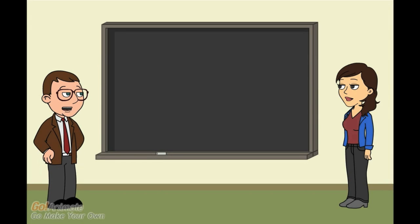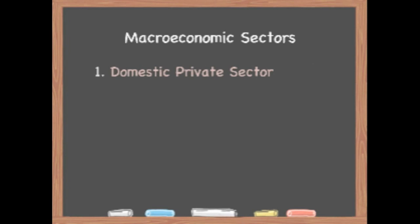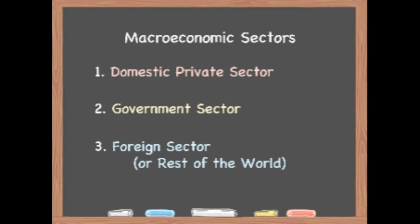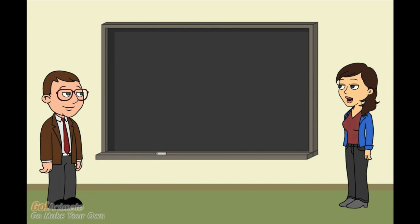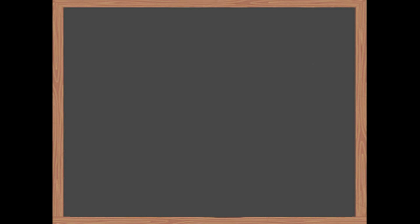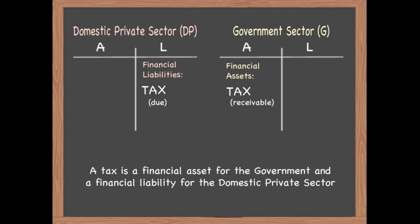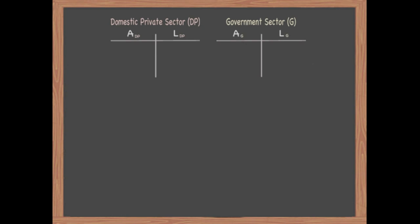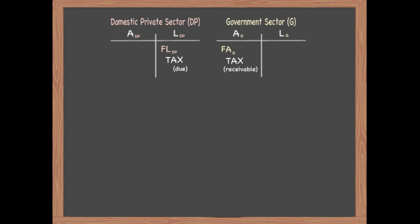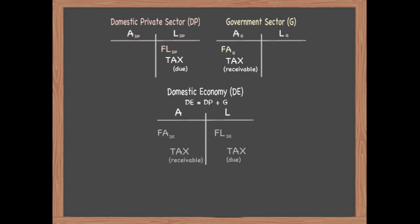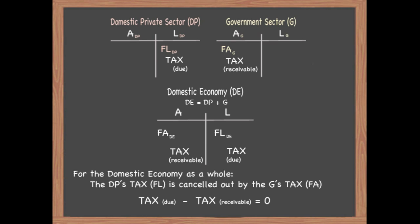Correct. What are the other sectors? There are two other macroeconomic sectors: the government sector and the foreign sector, also called the rest of the world. Let's look at an example of how the domestic private sector and the government are interrelated. Say the government imposes a tax on the domestic private sector. The tax would be a financial liability for the domestic private sector and a financial asset for the government. Now if we aggregate the domestic private sector and the government into the US domestic economy, the financial asset and liability cancel each other out, because the domestic economy just owes itself.